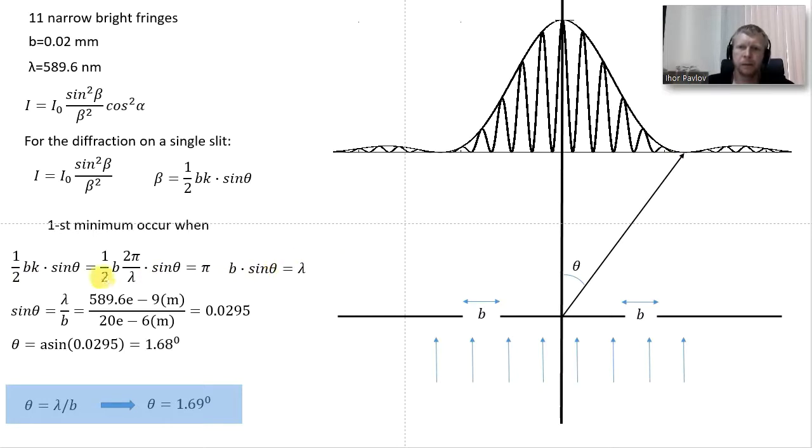From this equation we found that b times sine theta equals lambda. We calculate the sine theta and arc sine of that value will give us 1.69 degrees. This is the theta which corresponds to the direction from the slit to the first minimum on the screen.